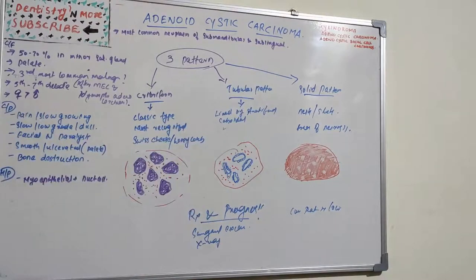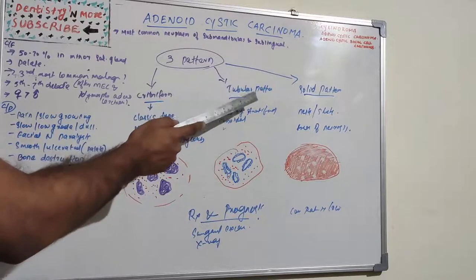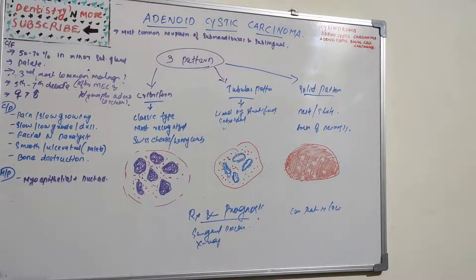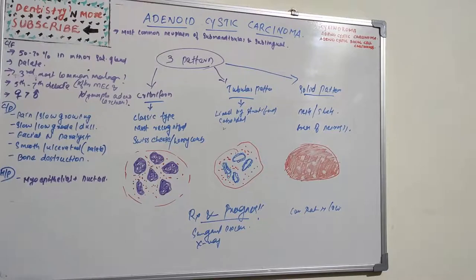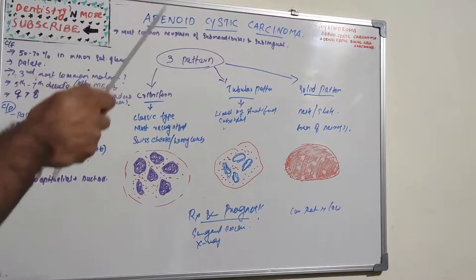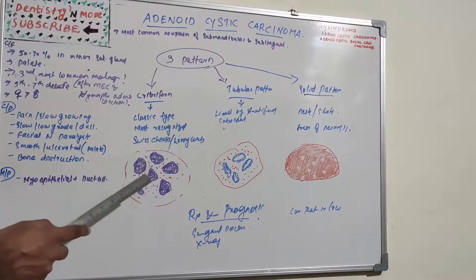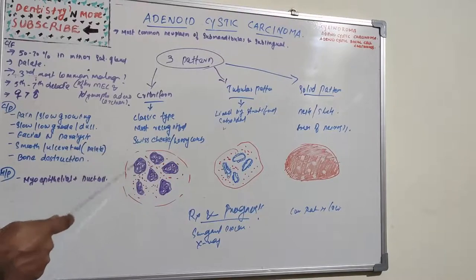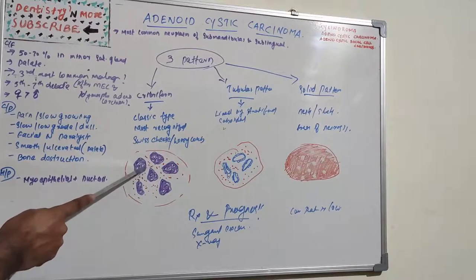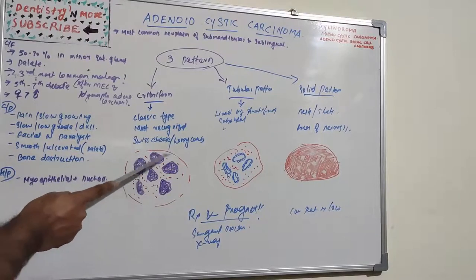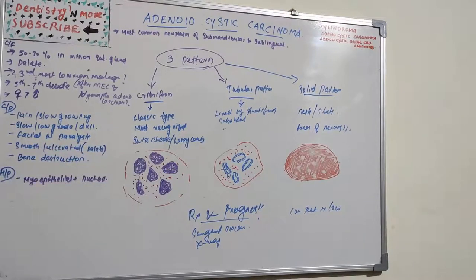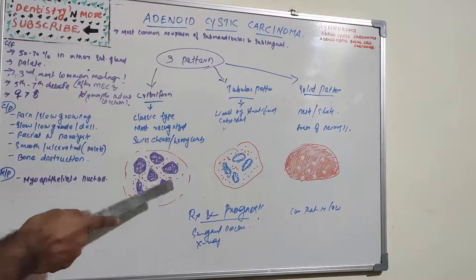The cribriform type is well-differentiated, the tubular type is moderately differentiated, and the solid type is undifferentiated. Usually a combination of these patterns is seen, and the tumor is classified based on the predominant pattern. The cribriform type is the most classic and best recognized appearance, characterized by islands of basaloid epithelial cells containing multiple cylindrical cyst-like spaces.